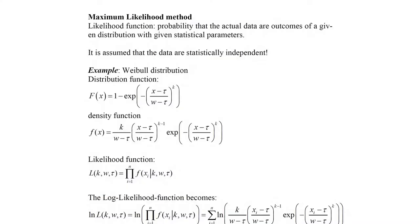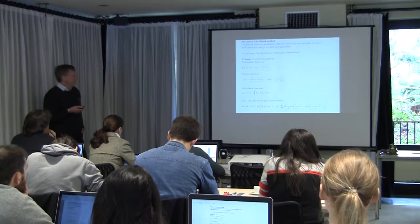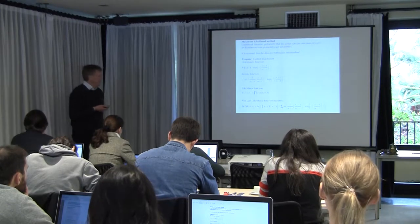The basic steps in using the maximum likelihood method are simply to obtain the likelihood function when you have some data, so that they give the best fit to the parameters. You assume a given distribution function and want to fit the parameters in that distribution function — something many of you have probably already learned in a basic statistics course. There will be a small extension of that in the next slides.